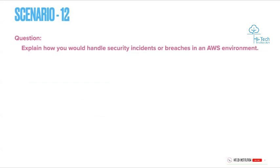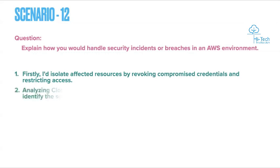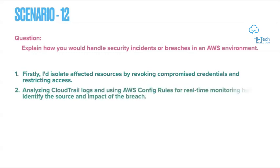Scenario 12: Explain how you would handle security incidents or breaches in an AWS environment. Whenever a security glitch, breach, or security-related ticket comes in, how would you face and handle it? First, I would isolate the affected resource by revoking compromised credentials and restricting actions. Once I identify that a particular resource is affected, I isolate it and do not allow it to interact with other resources in the environment.